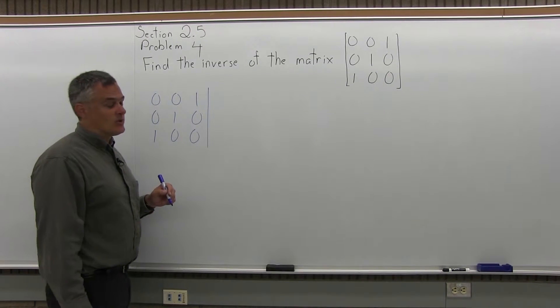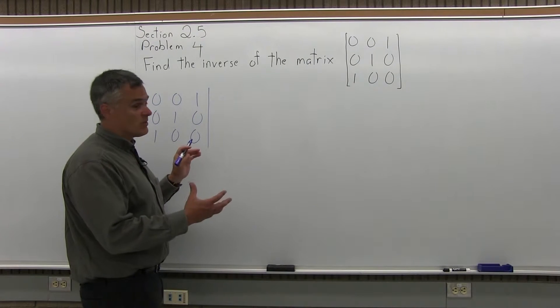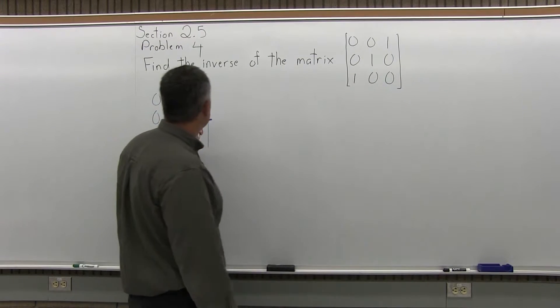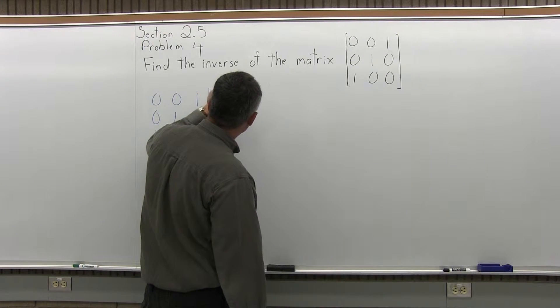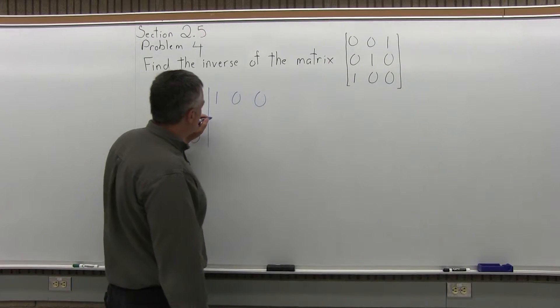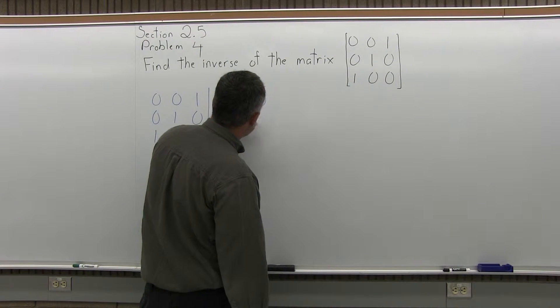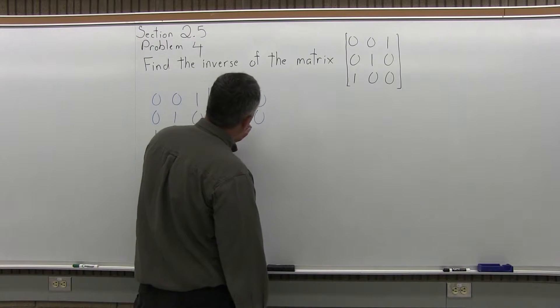So right next to it, we're going to put an identity matrix of the same size. So we're going to need the one with three rows and three columns. The top row of the right half of our double matrix is going to be 1, 0, 0. The middle row of our double matrix will be 0, 1, 0. And the bottom row of our double matrix will be 0, 0, 1.